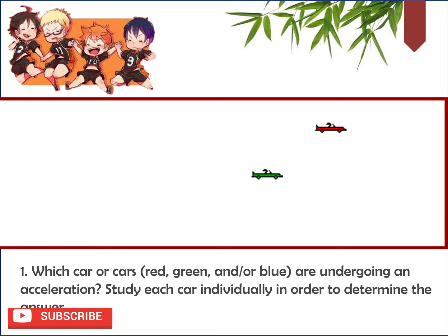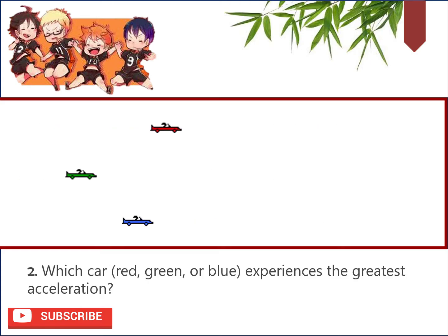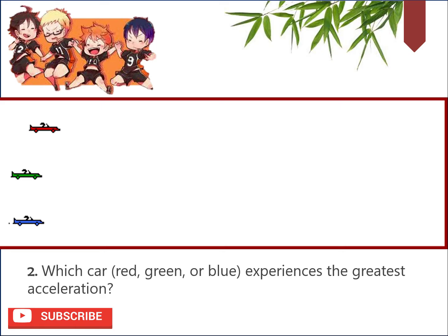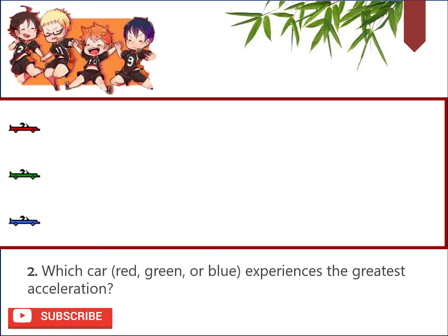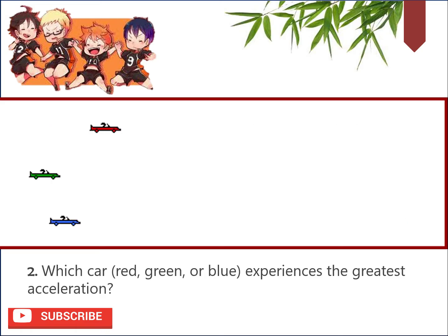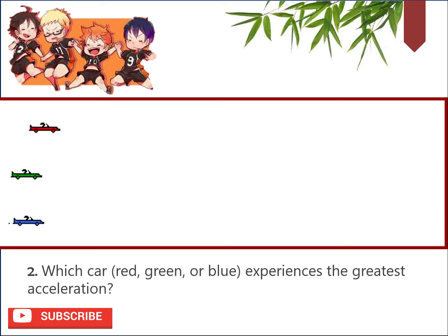Next — which car experiences the greatest acceleration? The answer is the blue car has a greater acceleration. Observe the movement of the three cars. As you can see, the blue car has a greater acceleration; it is changing its velocity at a more drastic rate. The green and blue cars are speeding up, thus covering an increasing distance in each second of the animation.